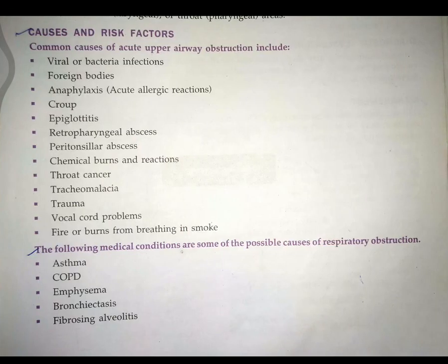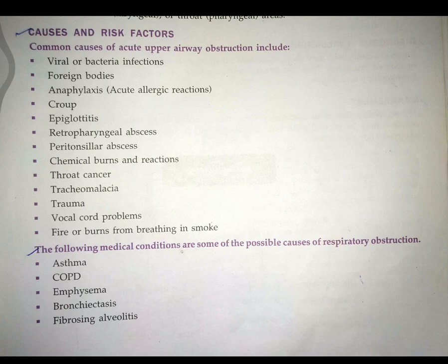Next are the causes and risk factors. Common causes of acute upper airway obstruction include viral or bacterial infection, foreign body aspiration, acute allergic reaction, croup, epiglottitis, retropharyngeal abscess (collection of pus in the back of the throat), peritonsillar abscess, and chemical burns.